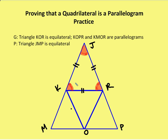So what we're going to do is prove that angle J, angle JKR, and angle JRK are all congruent. That's how we're going to prove that JMP is equilateral and equiangular. Okay, so here we go.